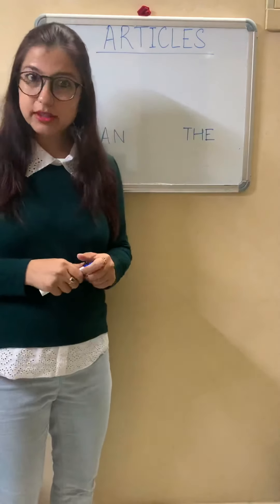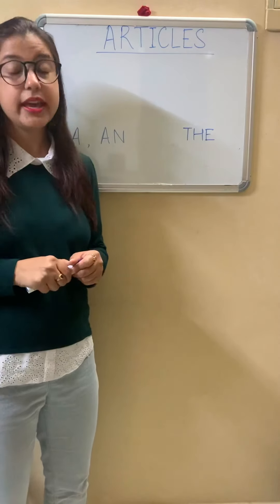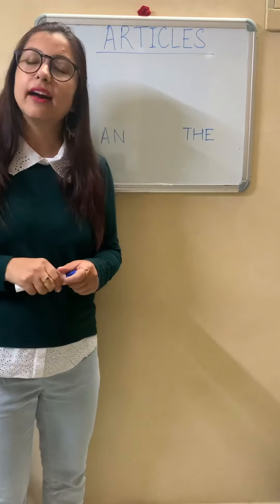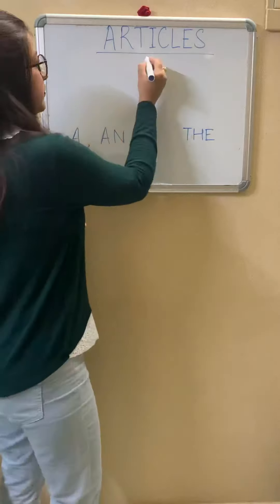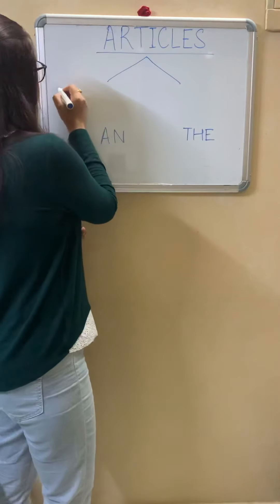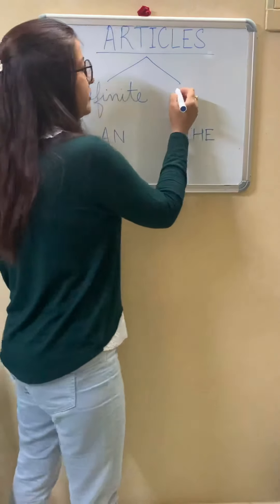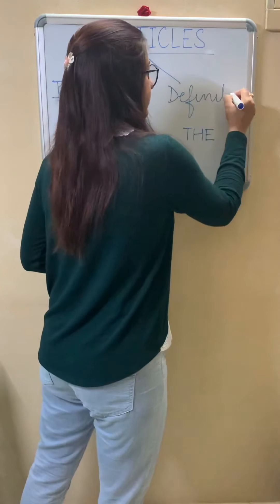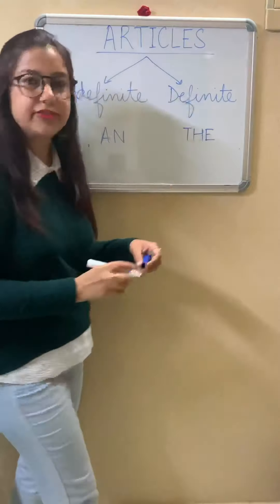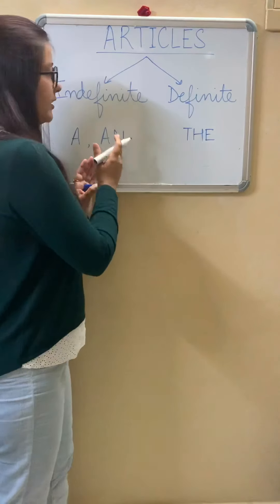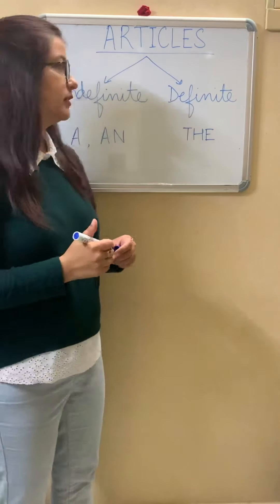Articles are a kind of determiners, and sometimes they are also called demonstrative adjectives as they qualify the noun, and they are used before nouns. Now there are two kinds of articles: indefinite article and definite article. A and an are considered to be indefinite articles, and the is called the definite article.